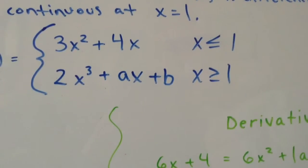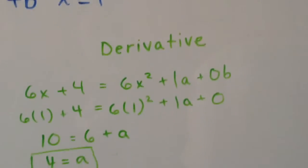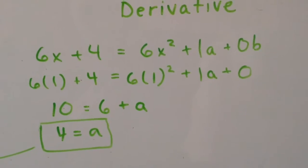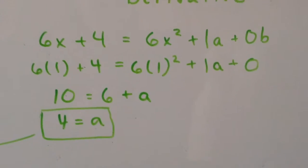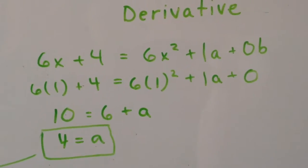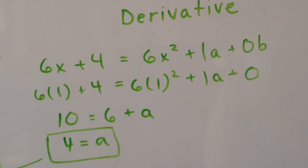Then I found the derivatives of the two equations and set them equal to each other. And the derivatives are 6x plus 4 and 6x squared plus a plus 0b, so b is just 0 since it was a constant.